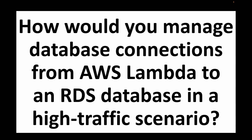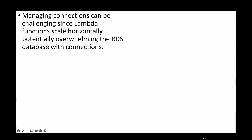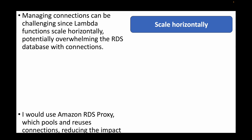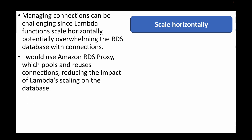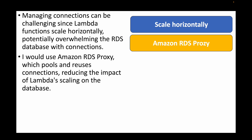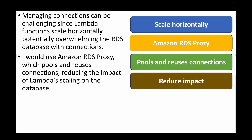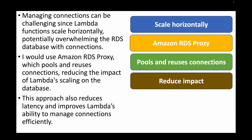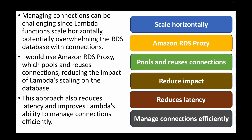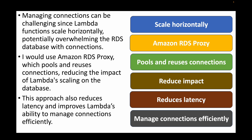The next question: how would you manage database connections from AWS Lambda to an RDS database in a high-traffic scenario? Managing connections from Lambda can be challenging since Lambda scales horizontally and can overwhelm RDS database connections. Instead of managing connections directly, you can use Amazon RDS Proxy, which pools and reuses connections, reducing the impact of Lambda's scaling on the database. This approach reduces latency and improves Lambda's ability to manage connections efficiently.